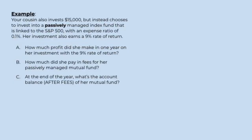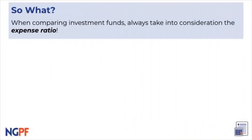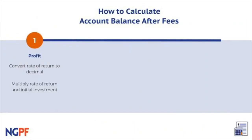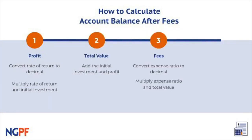So what have we learned from calculating active versus passive funds? Whenever we are comparing investment funds to choose from, we should always take into consideration the expense ratios. Let's recap what we just did: first, we multiplied the rate of return by the initial investment to find the profit. Then we calculated the total value by adding the initial investment and profit. Next, we multiplied the expense ratio by the total value to find the management fees. Lastly, we subtracted the management fees from the total value to get the account balance after fees.